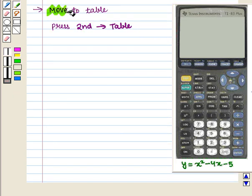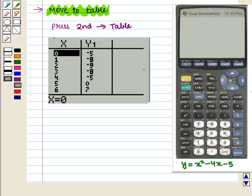Let us again move to table. For this we press 2nd key followed by table key. Then we get this table. For y-intercept, we see the value in table where x coordinate is 0. See here for x = 0, y = -5.